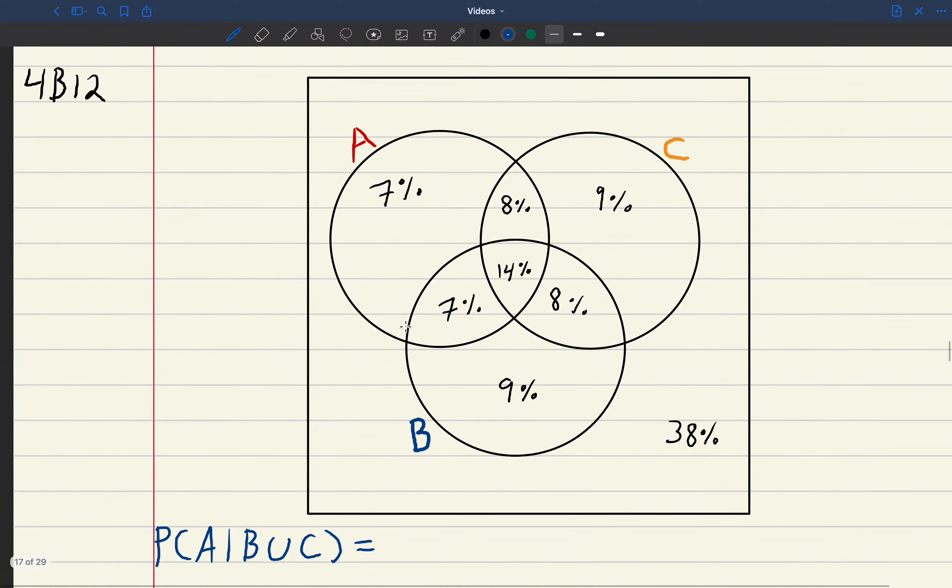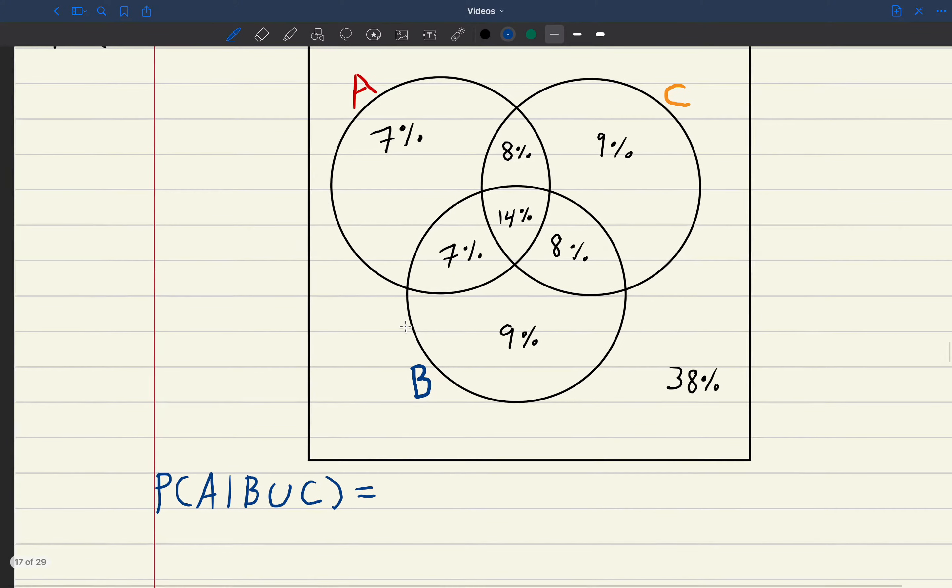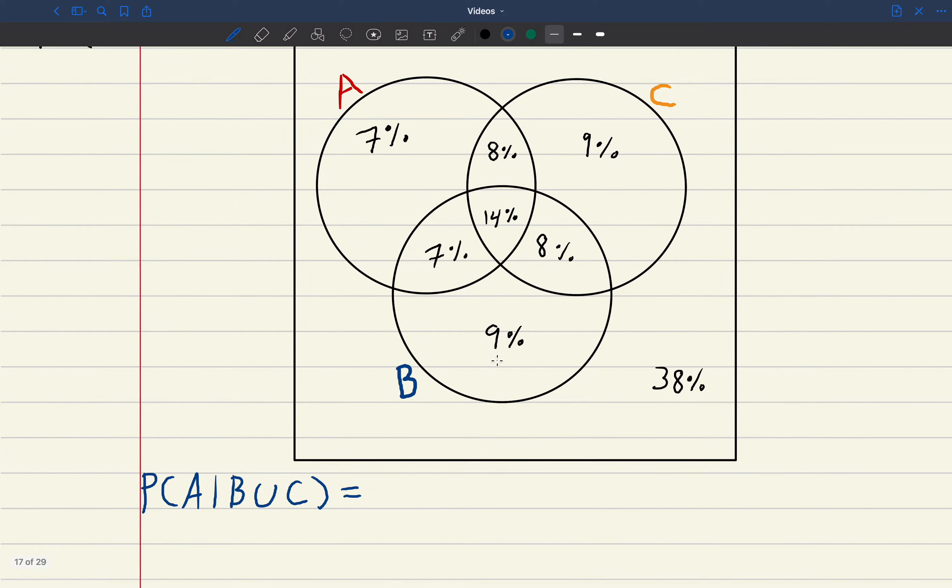Now here's an example of a Venn diagram. These are three sets, A, B, and C. And in these three sets we can talk about conditional probability.